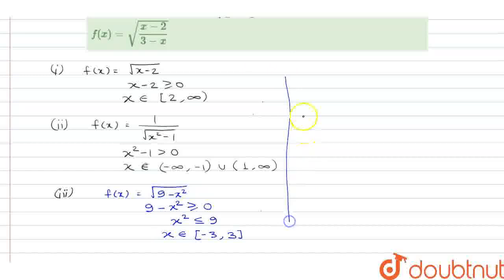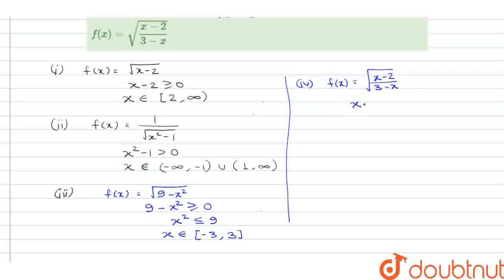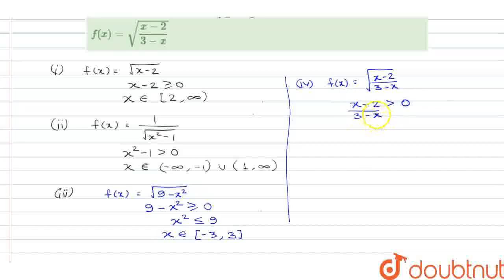The last function is f(x) = √((x - 2)/(3 - x)). This is also a real valued function. The function is defined for all real numbers where (x - 2)/(3 - x) ≥ 0. If we check the numerator, putting x > 2 makes it positive. But for the denominator, putting x > 3 makes it negative.